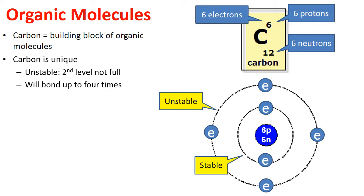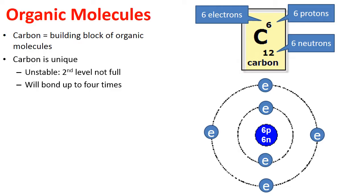Carbon will bond up to four times, and by doing so it makes rather large, complex organic molecules. Carbon figures out a way to obtain a fifth, sixth, seventh, and eighth electron from other atoms in order to become stable. This explains why there's such a wide array of organic carbon-based molecules.